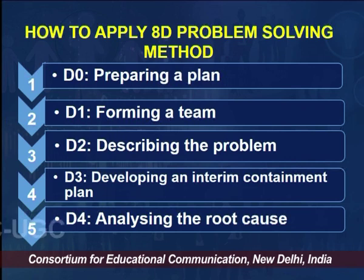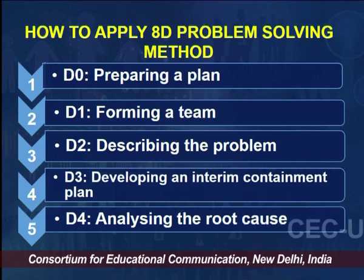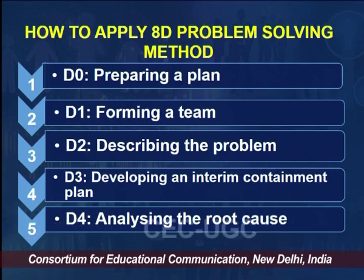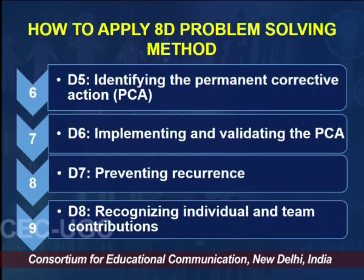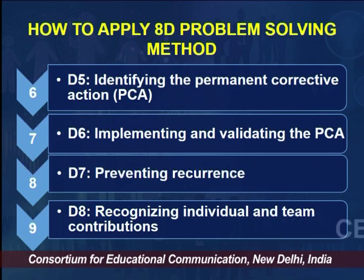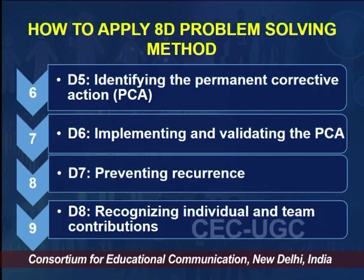To apply the 8D Problem Solving Method, as the name suggests, there are 9 steps beginning from D0. D0 is preparing a plan, D1 is forming a team, D2 is describing the problem, D3 is developing an interim containment plan, D4 is analyzing the root cause, D5 is identifying the permanent corrective action, D6 is implementing and validating the PCA, D7 is preventing recurrence, and D8 is recognizing individual and team contributions.